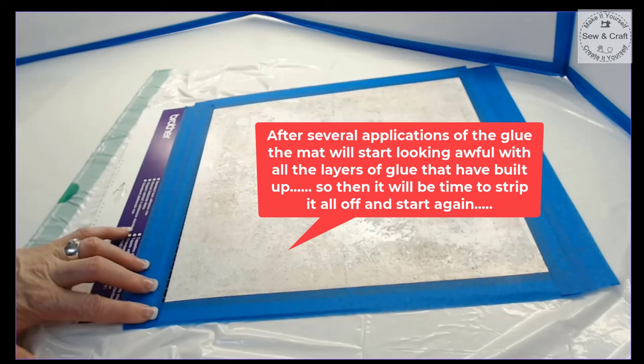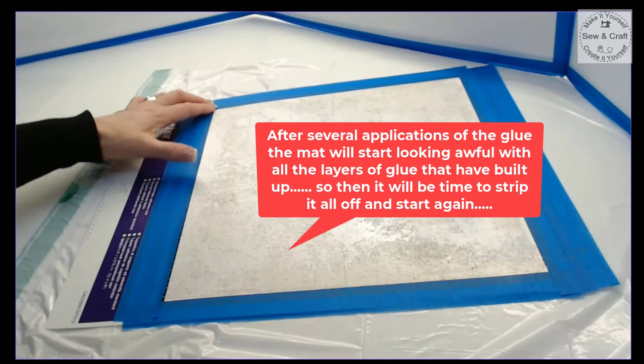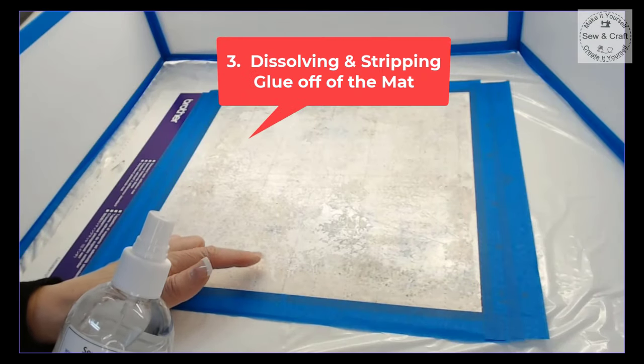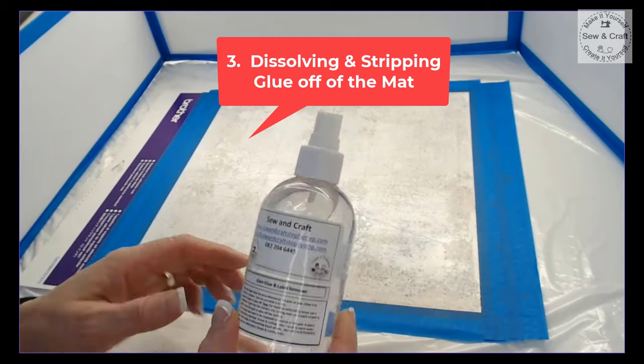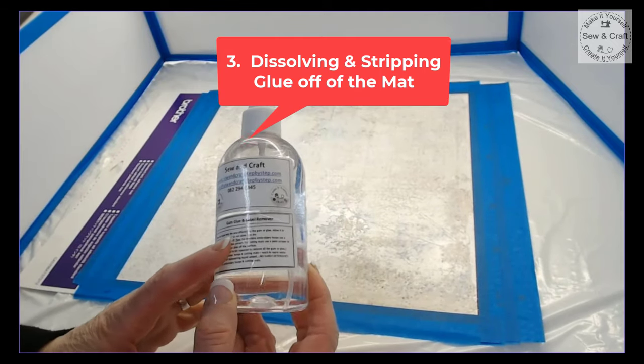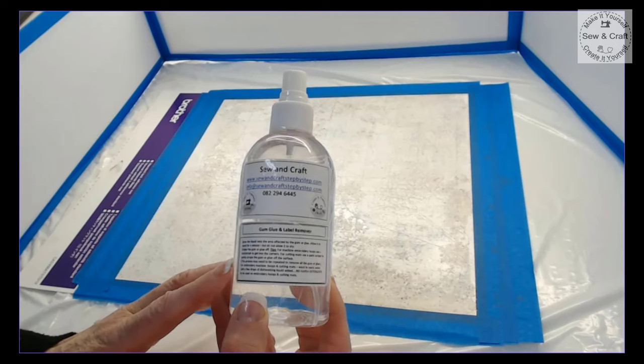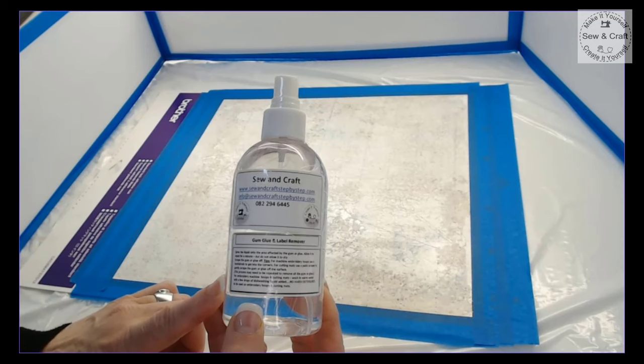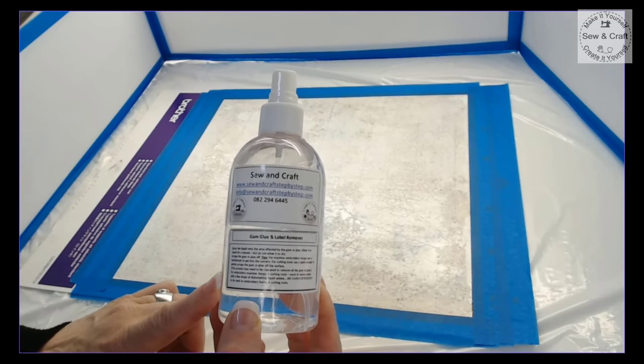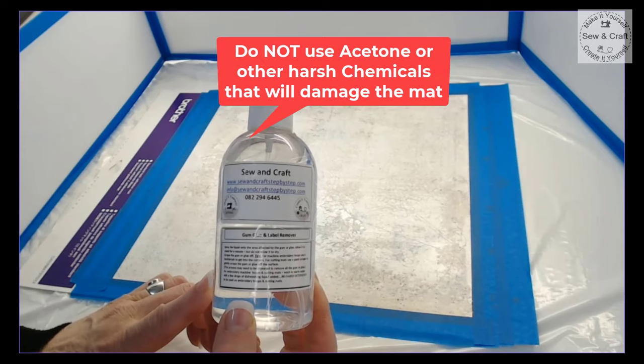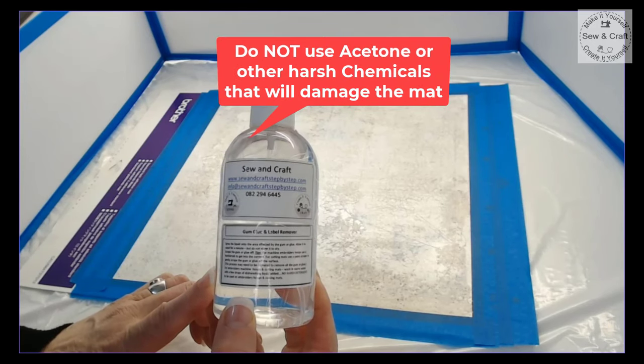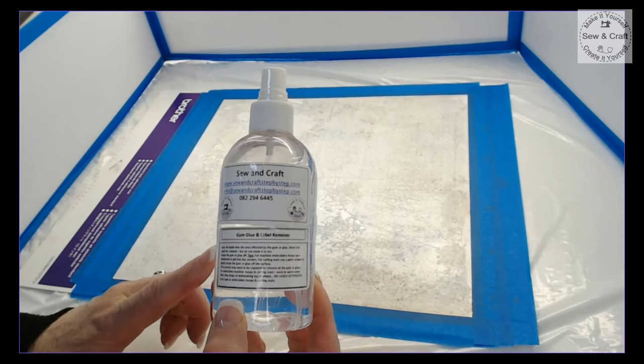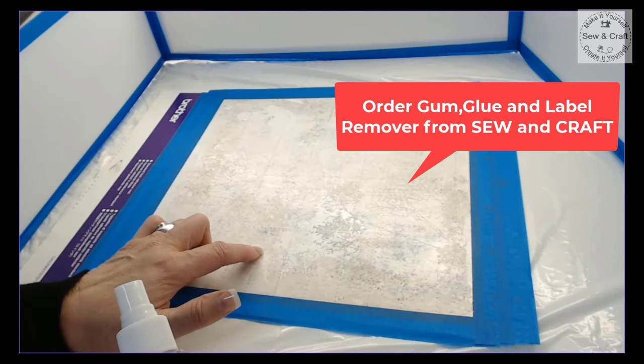Now I'm going to show you the process to strip the glue off of the mat. This is the product that I'm going to use that will dissolve and then strip the glue off of the mat and it's called gum glue and label remover. This is a product that I've had specially prepared that won't damage the mat. I also use it on my embroidery machine hoops to remove the glue from them without damaging them. The important thing is not to use anything that is harsh like for example acetone, so rather use something like the gum glue and label remover.